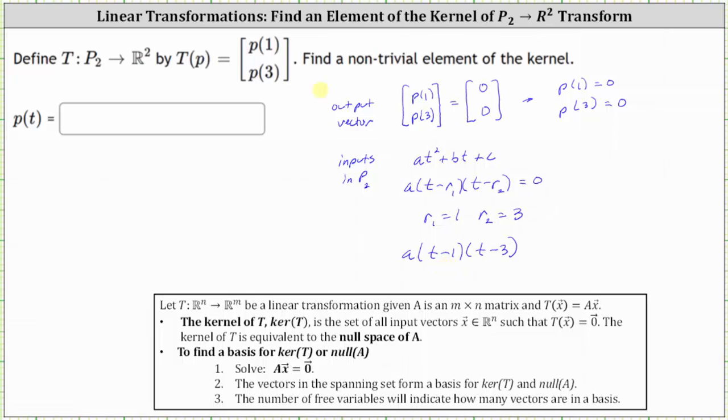And here, we're only asked to find one non-trivial element of the kernel. So we can let A be any real number except zero. If A is zero, we have the trivial solution. So if we let A equal one, for example, we can let the non-trivial element be p of t equals the quantity t minus one times the quantity t minus three.